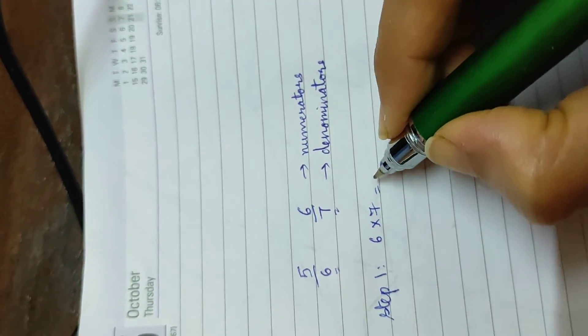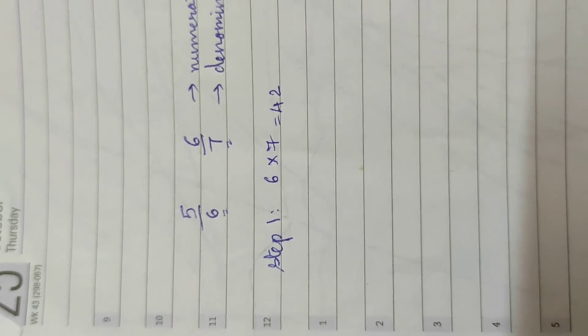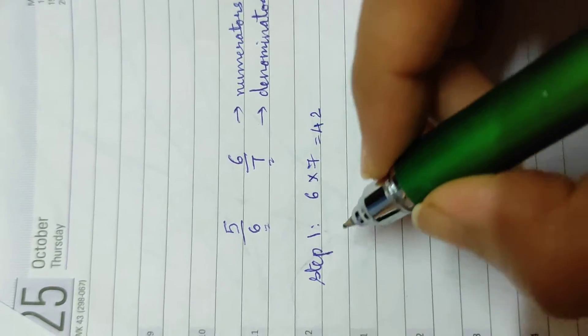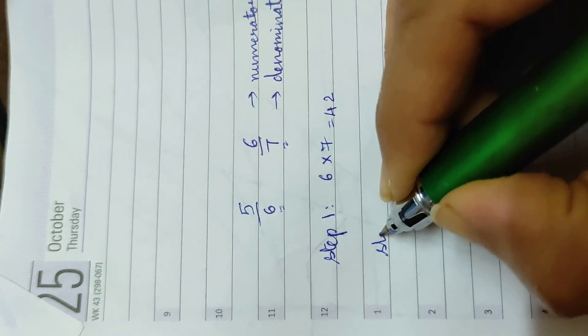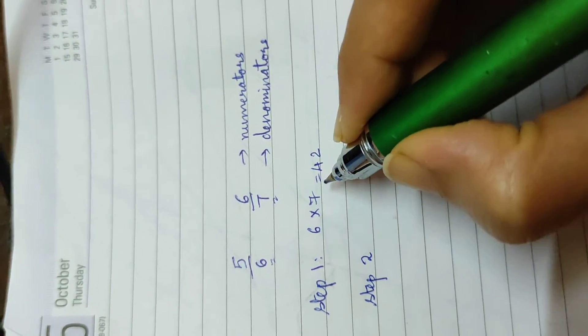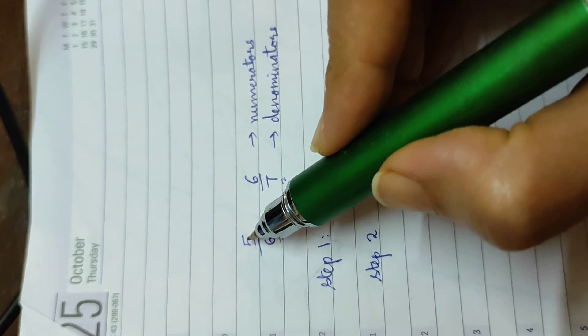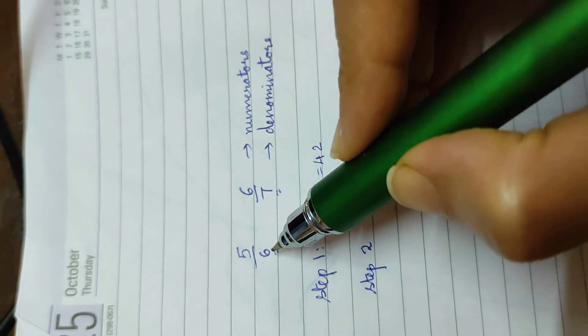Then step 2 is we multiply the numerator also with the same number that you multiplied the denominator with. So we had multiplied 6 with 7, so we will also multiply 5 with 7.